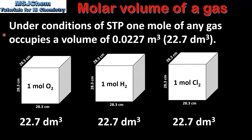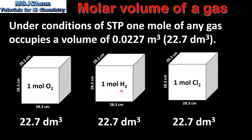In the previous slide we defined the molar volume of a gas as the volume occupied by one mole of an ideal gas under conditions of STP. Under these conditions real gases such as oxygen, hydrogen and chlorine behave almost the same as ideal gases. For example, one mole of oxygen gas under conditions of STP will occupy a volume of 22.7 decimetres cubed. The same is true for one mole of hydrogen gas and one mole of chlorine gas. So under conditions of STP, one mole of any gas, be it an ideal gas or a real gas, occupies a volume of 0.0227 metres cubed, which is more commonly given as 22.7 decimetres cubed.